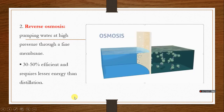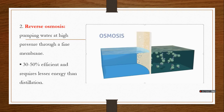The second method is reverse osmosis, which involves pumping water at high pressure through a fine membrane. Remember, osmosis is the movement of water from a region of high water potential to a region of low water potential down the concentration gradient through a semi-permeable membrane. Reverse osmosis is the opposite: pumping water from a region of low water potential to a region of high water potential through a semi-permeable membrane. This requires pressure to push the water against the concentration gradient.